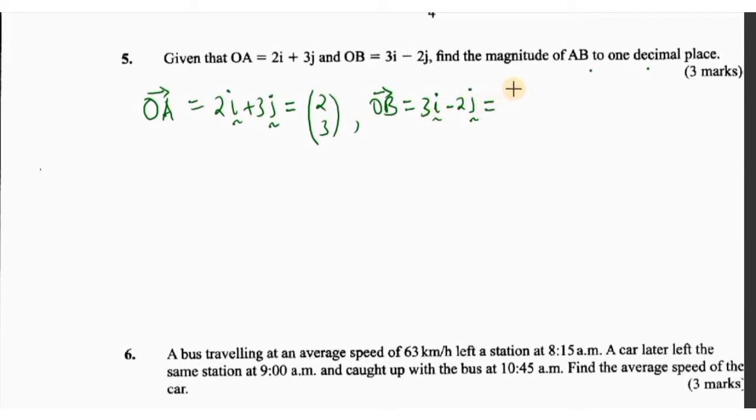Because we are asked to get the magnitude of AB, first of all we'll get vector AB. So for us to get vector AB, we'll get the position vector of B minus position vector of A, and that is simply OB minus OA.